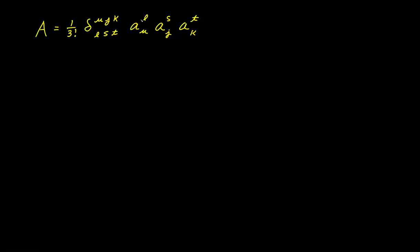Here we have the expression for the determinant of a system A with one upper index and one lower index. Let's see what happens when we take the partial derivative of this determinant with respect to one of the components. We're going to find the partial of A with respect to one of the elements and we'll use the indexes R and I here.